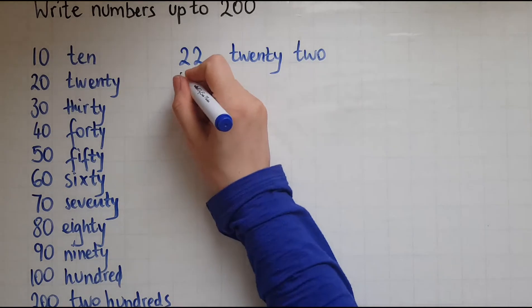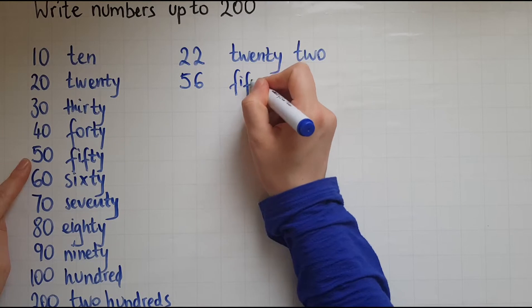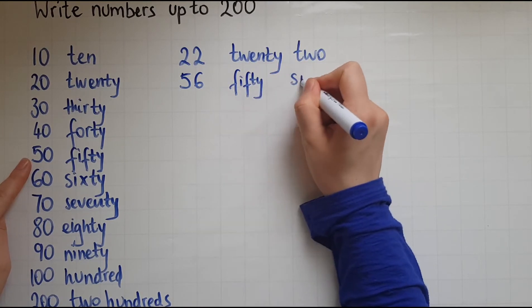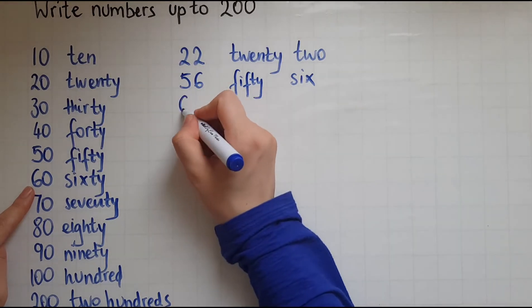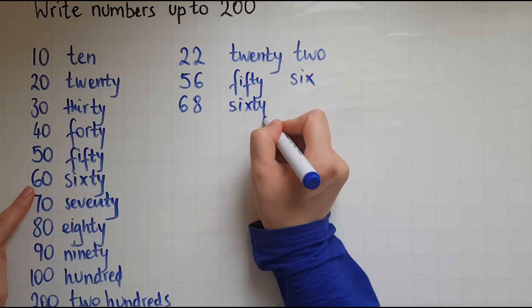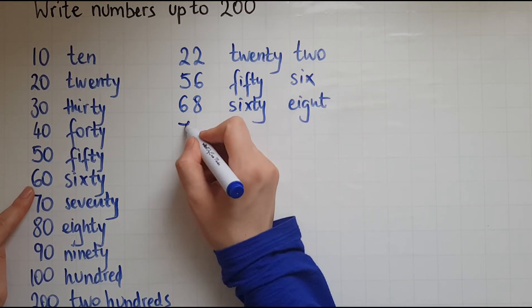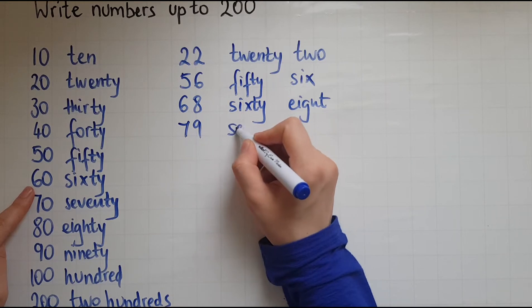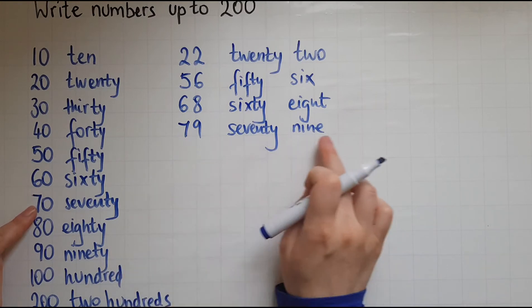If you want to write 56, so write the 50 and the 6. If you want to write 68, so 60, 8. 79, 70 and the 9.